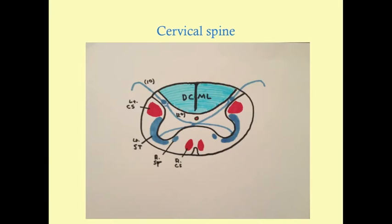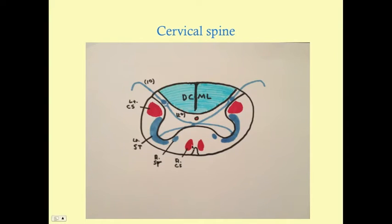Here in the cervical spine cross-section, we have the DCML traveling up the posterior column, the corticospinal tract with both its lateral and non-decussating anterior divisions, and the spinothalamic tract.